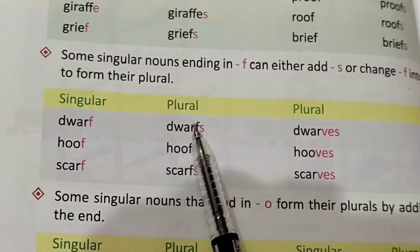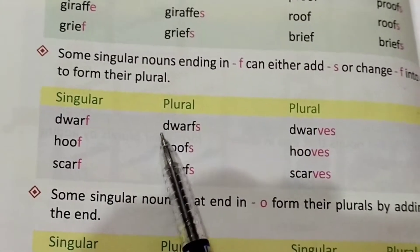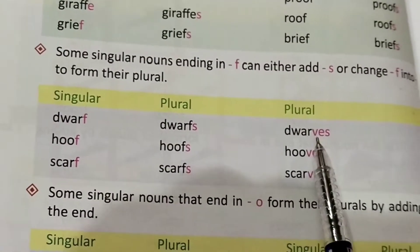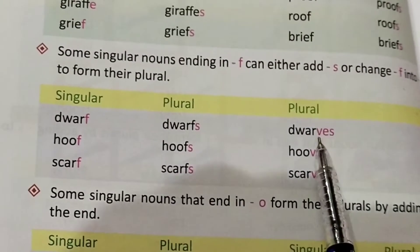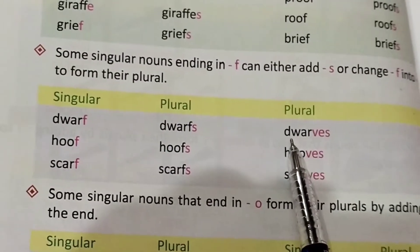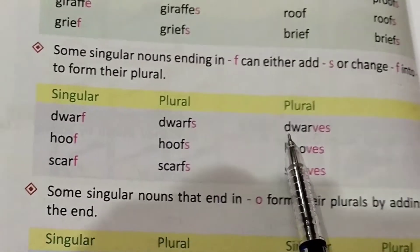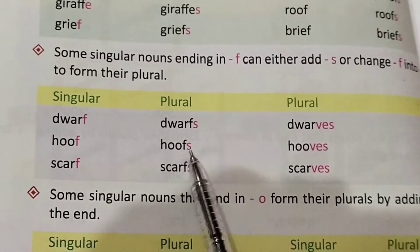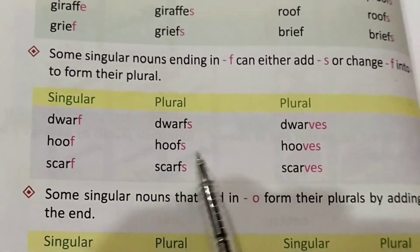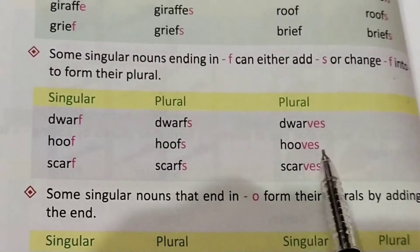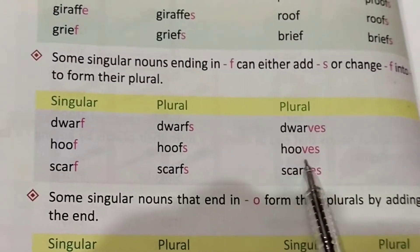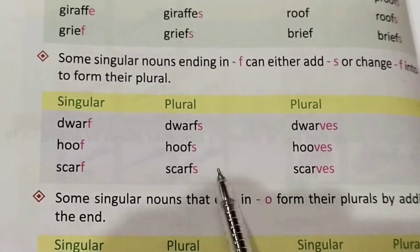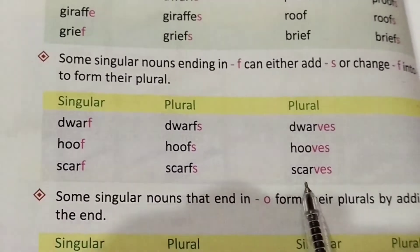For example, dwarf can become dwarfs (adding -s) or dwarves (adding -ves). Similarly, hoof → hoofs or hooves, scarf → scarfs or scarves. These words have two valid plural forms.